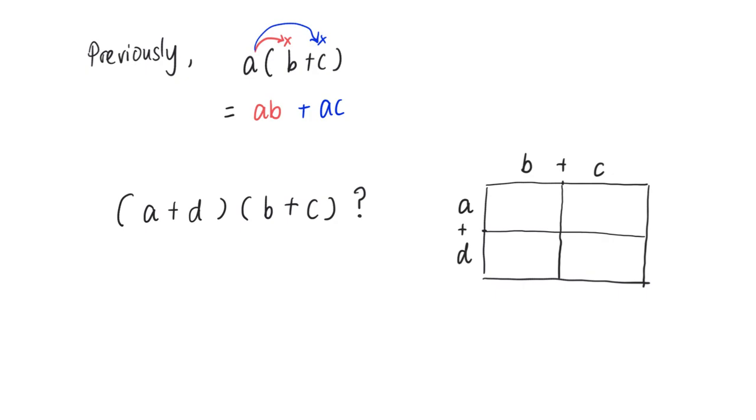So to find the area of this rectangle, which is (a + d) times (b + c), notice that I could actually find the individual rectangles. This part is a times b, so basically it's ab. This part here is a times c: ac. So I will have ab positive ac.